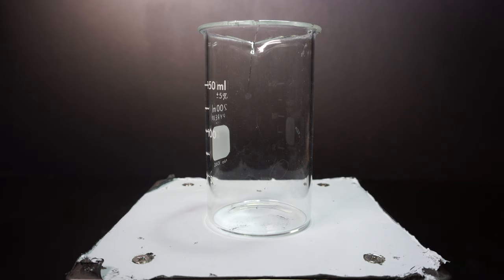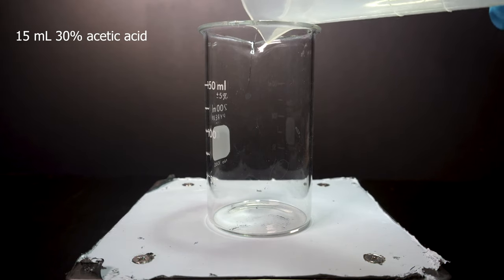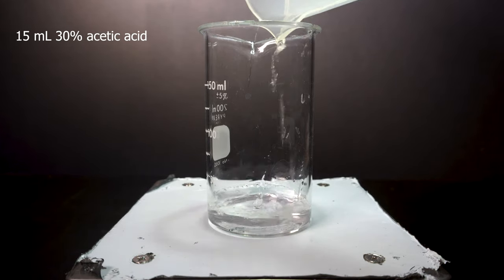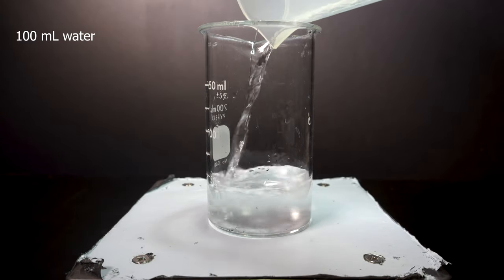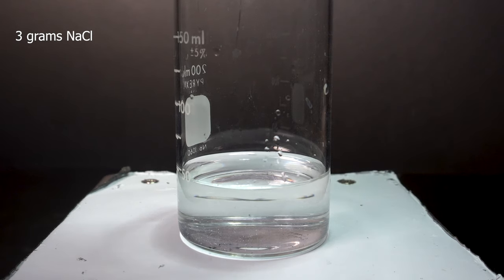First we need to clean our pennies of oils and copper oxides that are present because pennies are usually really dirty and the dirt or oil could cause complications later on. To do this we add 15 milliliters of 30% vinegar to a beaker followed by adding just around 100 milliliters of distilled water. I forgot to film it but you also add in 3 grams of kitchen salt.